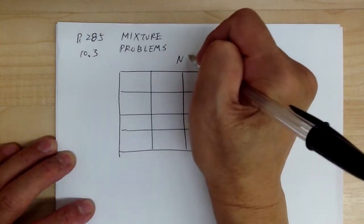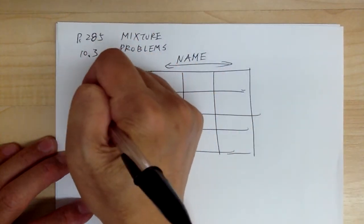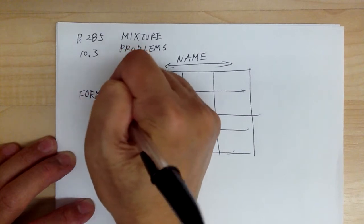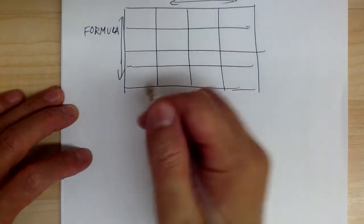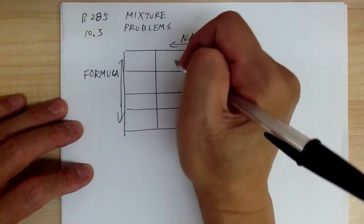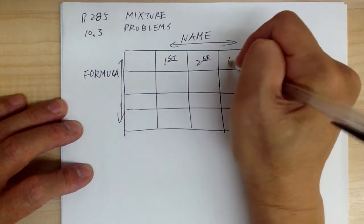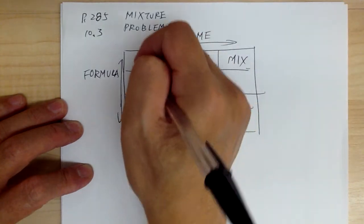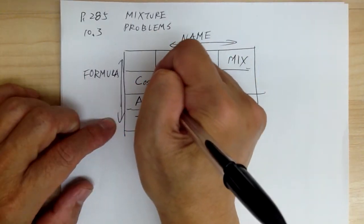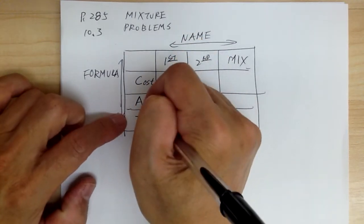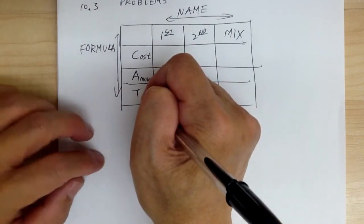Normally you put the names across the top and the formula going down the vertical column. For a mixture, you'll have the first item, the second item, and then the mix on the right. The vertical formula is C, A, T — where C is for cost, A is for amount, and T is for the total price, the subtotal.